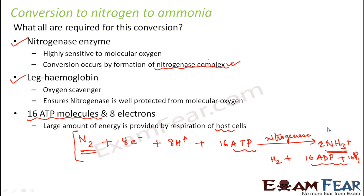Looking at the overall process: in the first step, the nodules are formed. When chemicals are released, the bacteria infect the root cells and that is how the nodules are formed. Once the nodule is formed, it contains the enzyme nitrogenase, leghemoglobin, and the amount of energy required. That is how the conversion takes place.